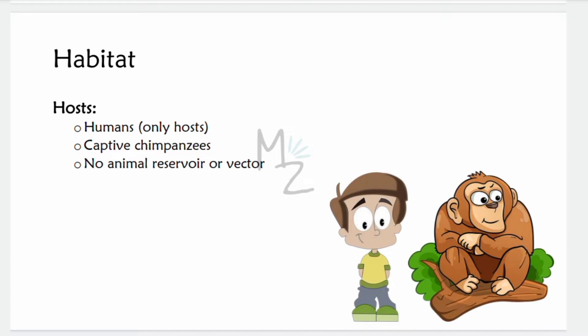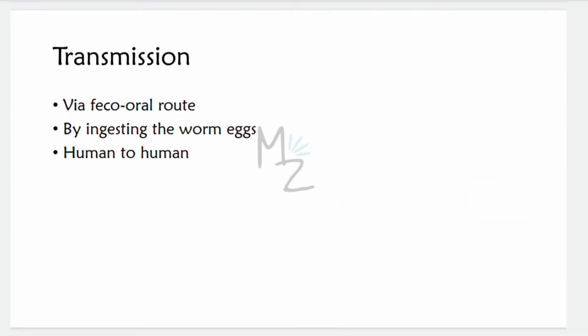Habitat and hosts: humans are considered the only hosts for Enterobius vermicularis. Enterobiasis occurs only in humans — there is no animal reservoir or vector, although occasional infections have been reported in captive chimpanzees. Transmission occurs via the feco-oral route, but human-to-human transmission can also occur. Infection is definitively transmitted by ingesting the worm eggs.